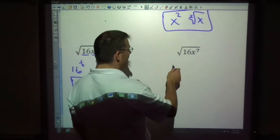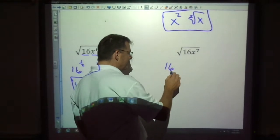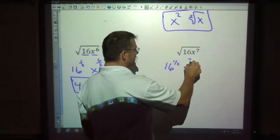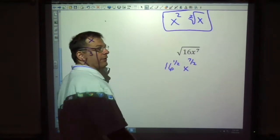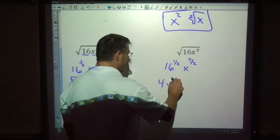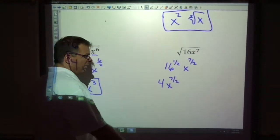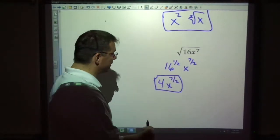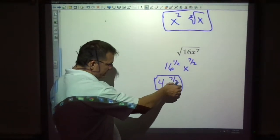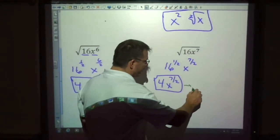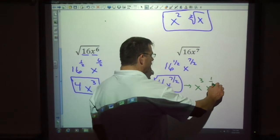This one, same thing. We've got 16 to the one half power and x to the seven halves power. If the directions were to simplify using exponents, we would be fine to just leave it like this. If the directions said simplify using radicals, which it does sometimes, then this part we would need to readjust a little bit.